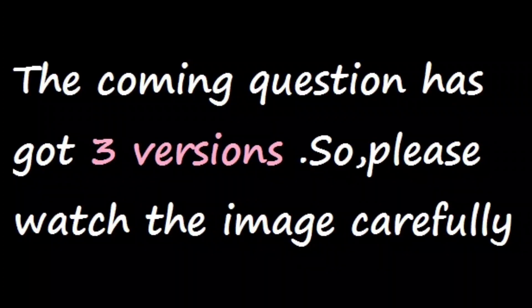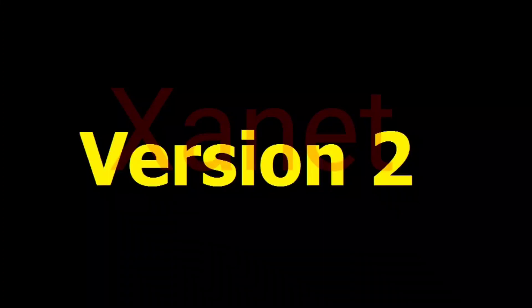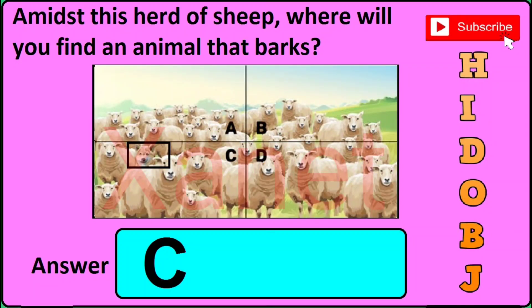Now this question number twelve has got three different versions or types, so you need to watch the image carefully and especially you need to spot the dog. In version one, you can see that a dog is in A, marked with a black rectangle, so just click A if you find the dog in quadrant A. In version two, you can see that a dog is in C, so you need to click C in the answer box.